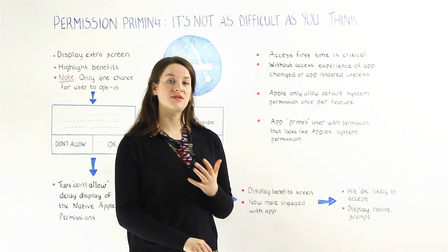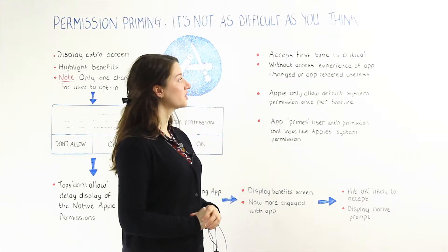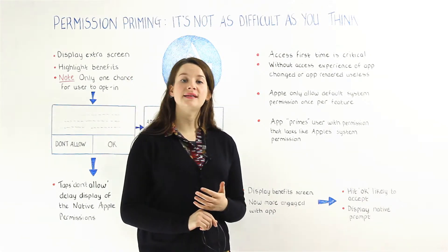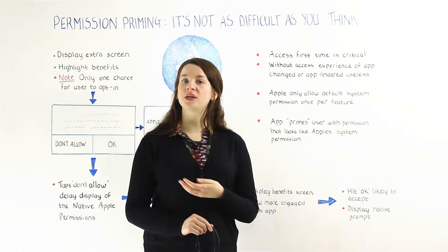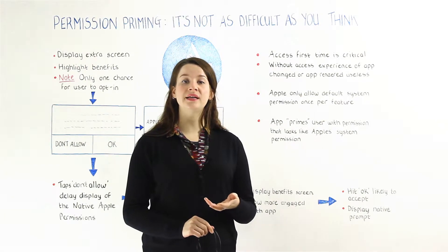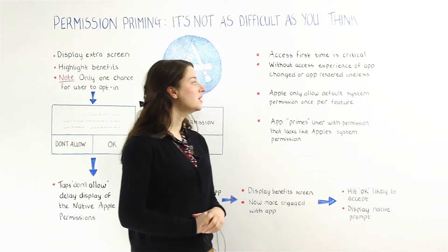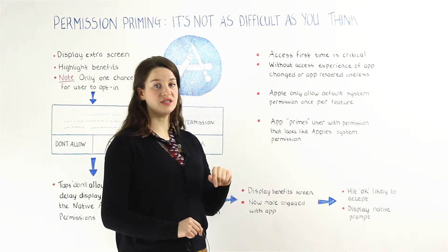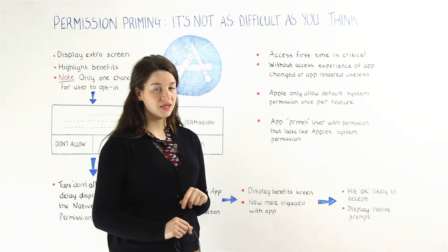Getting access or permission from your users for the first time is critical, as without this their experience with your app could be changed completely or even rendered useless. Apple only allows you to trigger the default system permission once per feature.